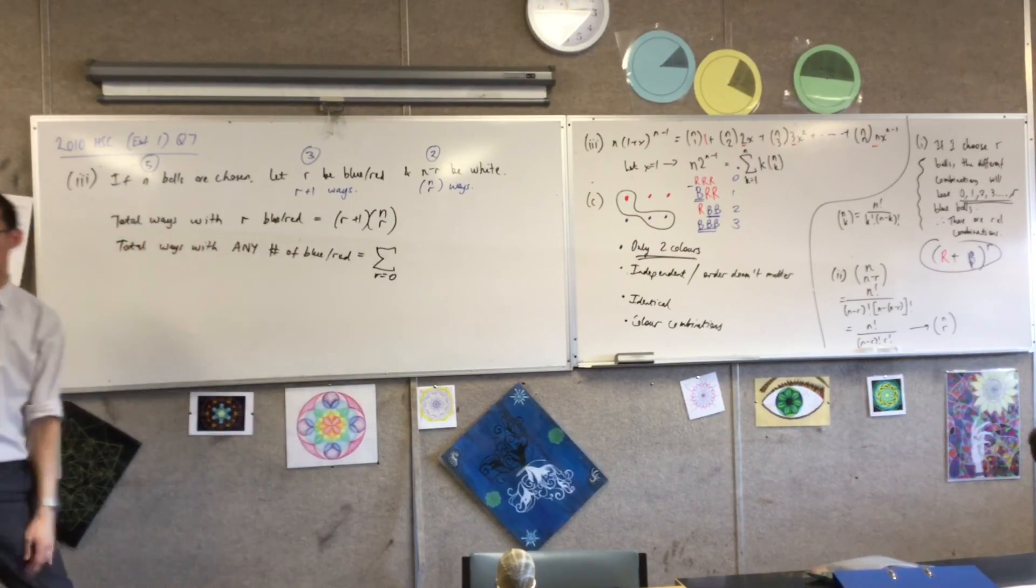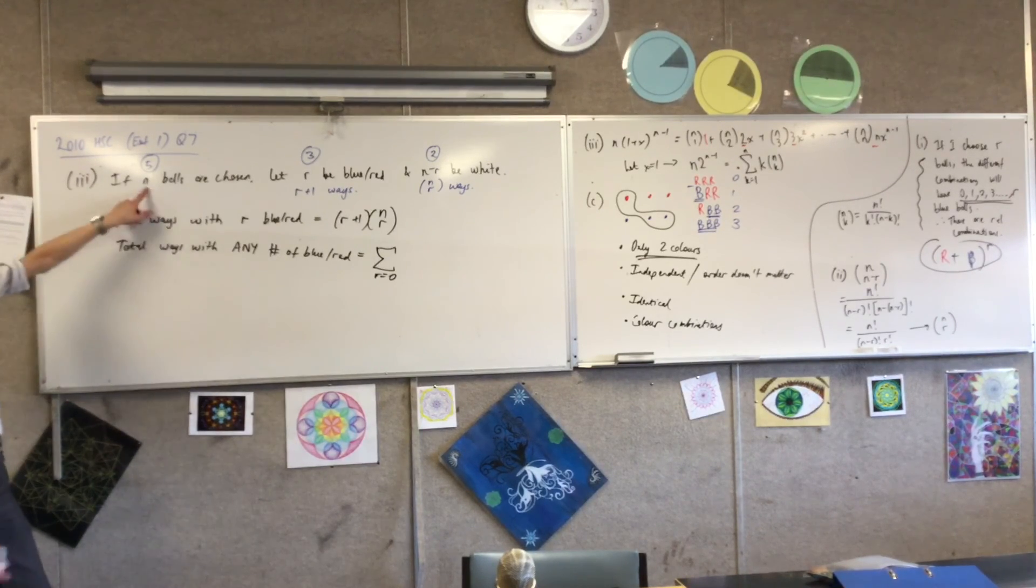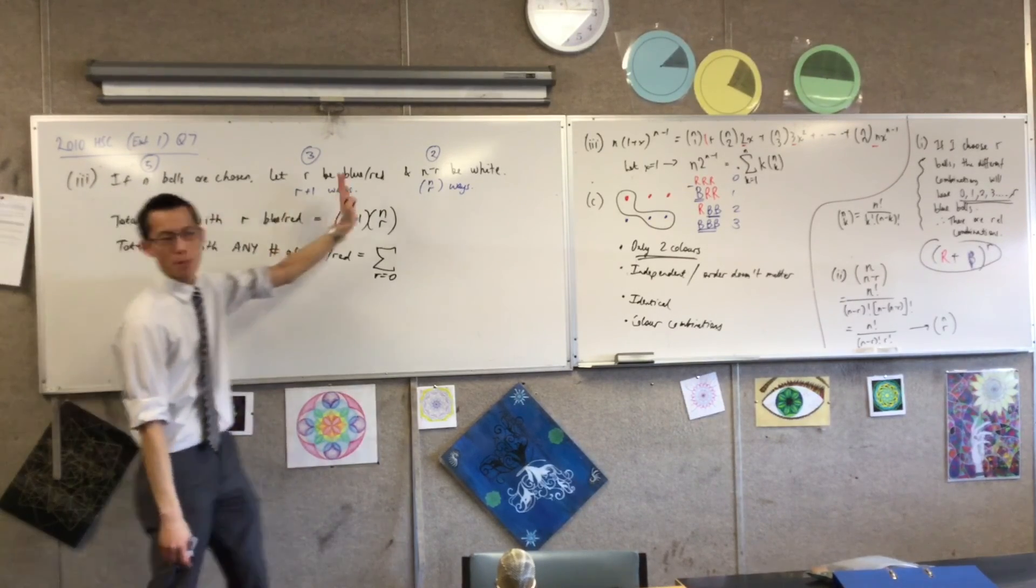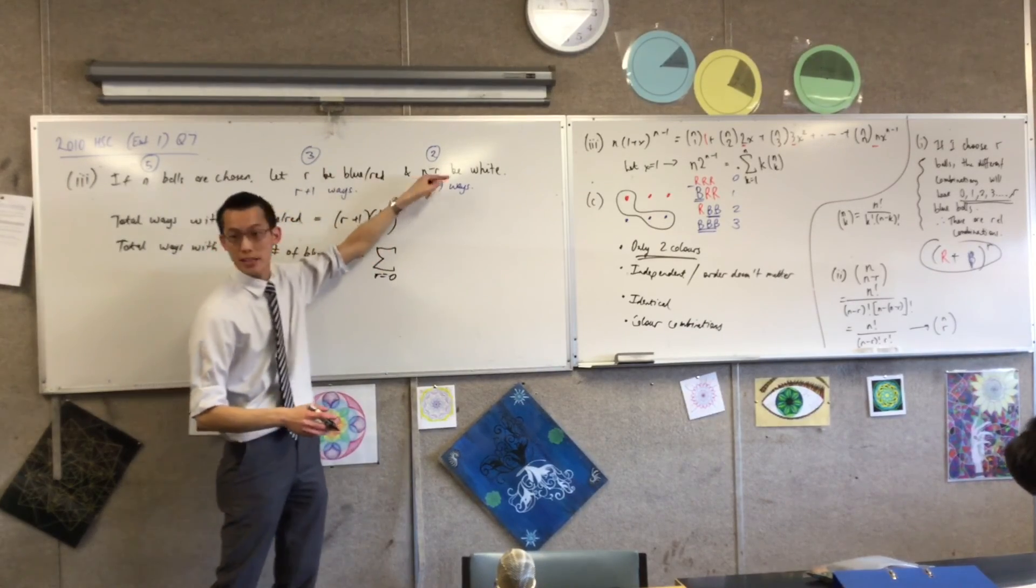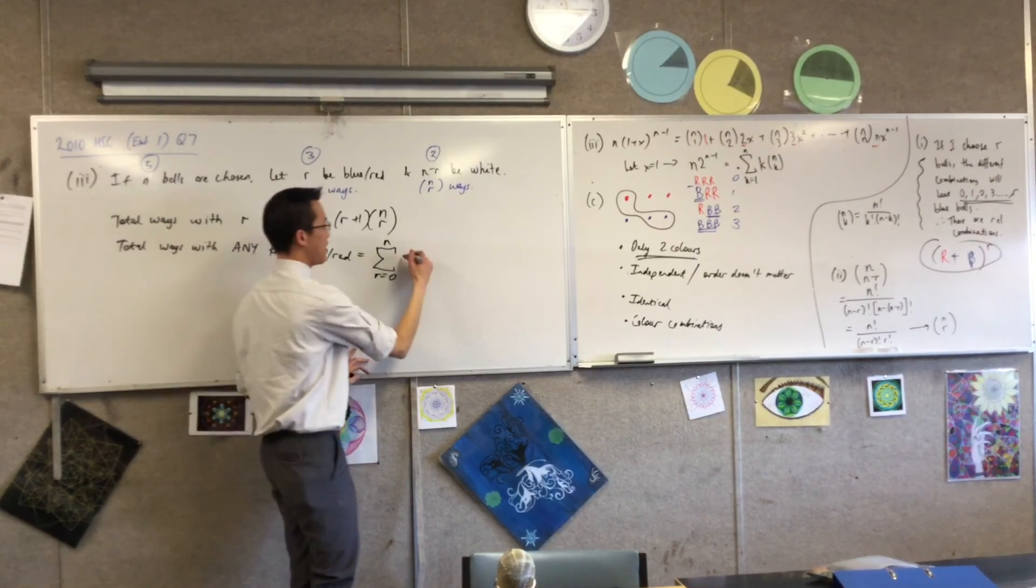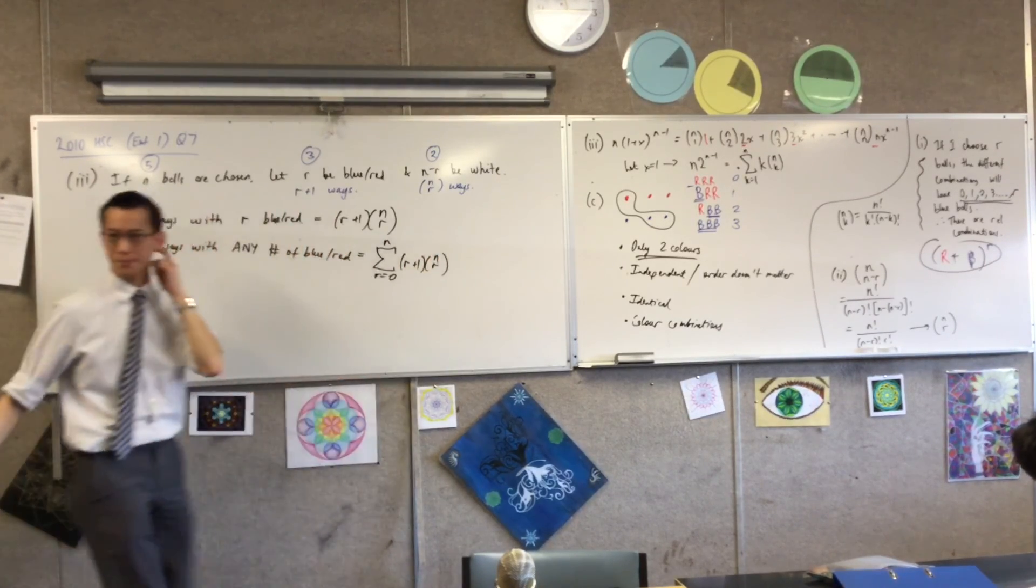What's the smallest number of blue-red that I could have? Zero. I don't have to choose any. They could all be white. That's fine. What's the largest number of blue-red I could choose? N. There are N balls being chosen. So I can choose N, and that means there will be none that will be white. Because this will be N, and that will be N minus N, which is zero. So I can go all the way up to N. And then this is what I'm adding up each time.